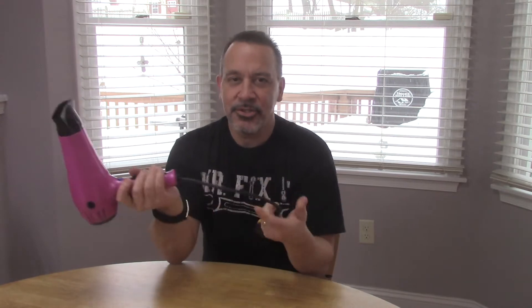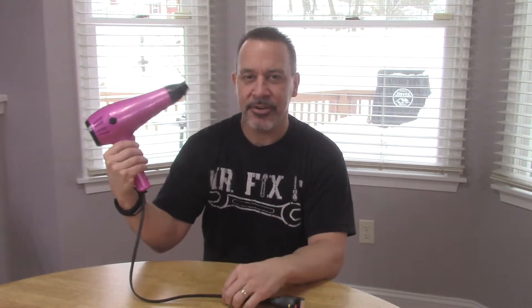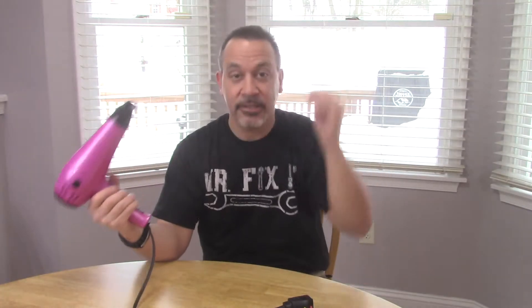The main reason why the cords on the hair dryers are breaking all the time is just the way you use it. You're moving it around all the time while you're drying your hair. I mean, it takes me almost an hour to get this dry. Vacuum cleaners, you run over the cord, the dog attacks it, whatever it may be.